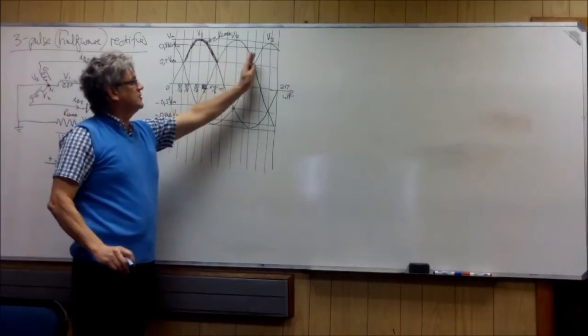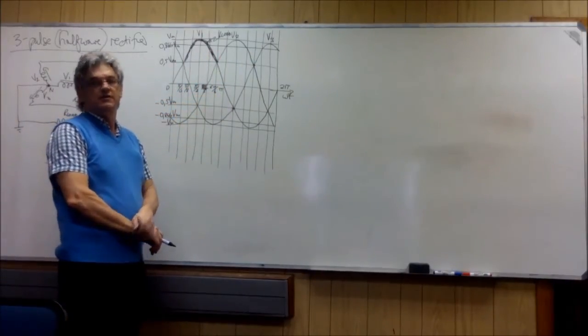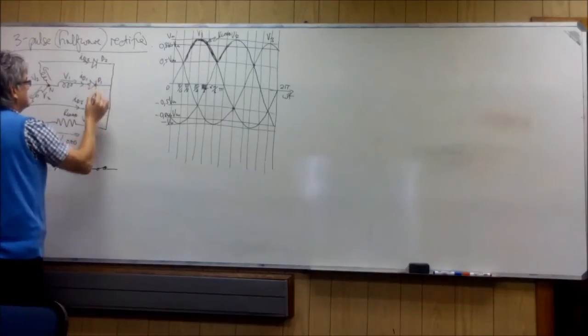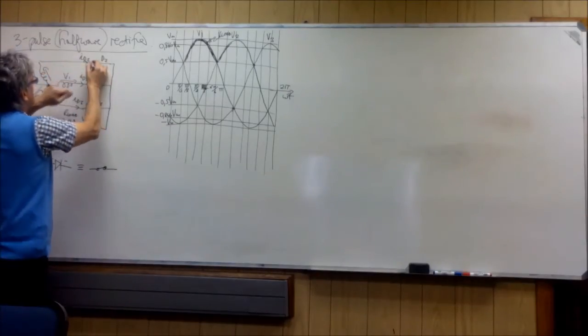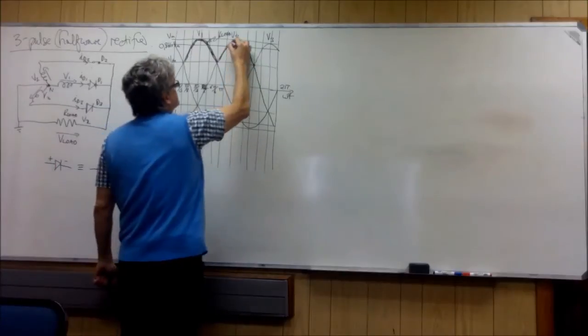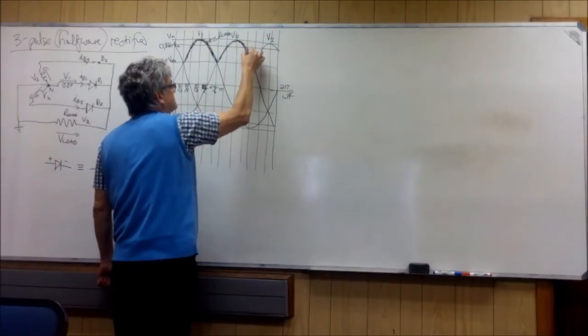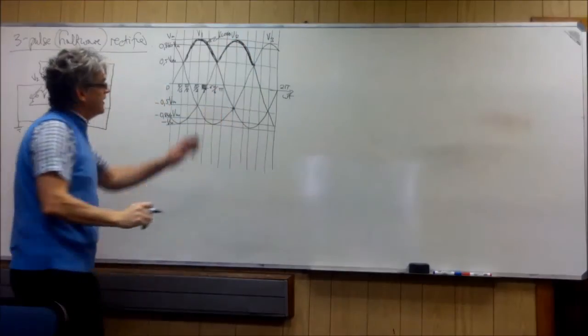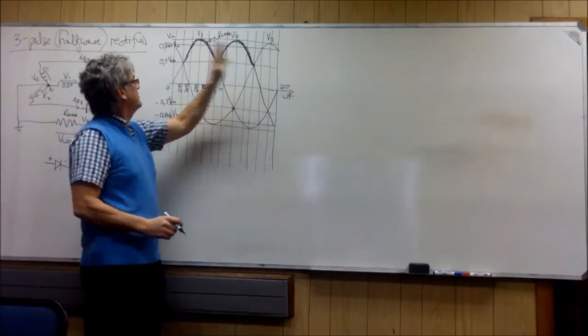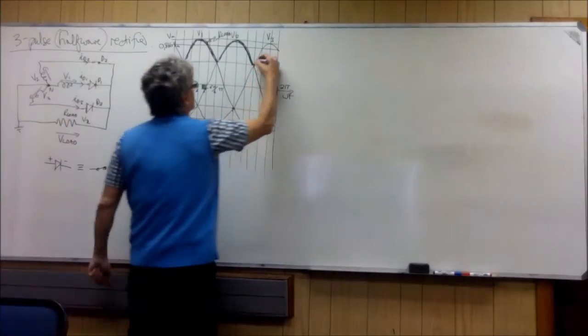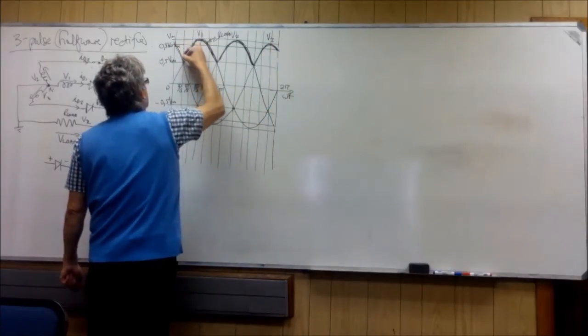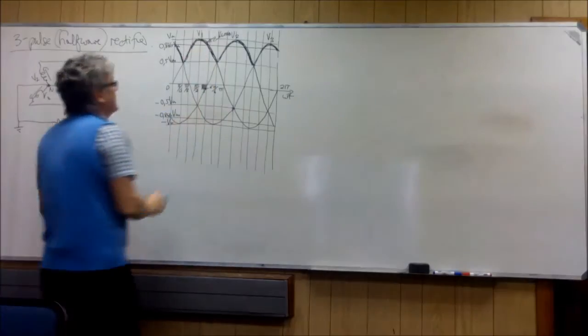Which one is the most positive? V2. V2. So now that guy is now once more a diode that is blocking, and this guy now is a closed switch. And this now is V2, and this now is V2. V2. And now from there, remember, this is 360, so we are back here. From there to there, who is the most positive? V3. V3. And there we have VLoad for the 3 phases.